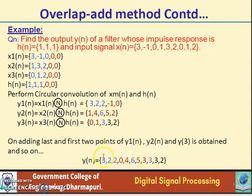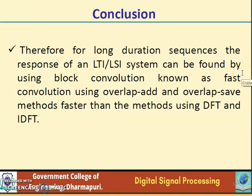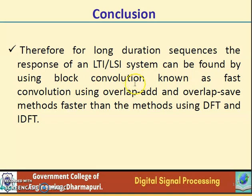This result is equal to whatever we obtained using the overlap-save method, so both methods give the same answer. Therefore, for long duration sequences, the response of an LTI or LSI system can be found using block convolution, known as fast convolution using segmentation algorithms — namely, the overlap-add and overlap-save methods — which are faster than methods using DFT and IDFT directly. Thank you.